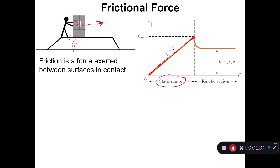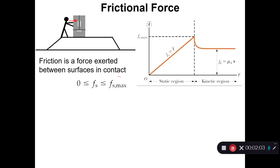In the static region, whatever force you apply, the body is not moving until the maximum static force is reached. After that, the body starts to move, and a slightly smaller force than the maximum is sufficient to keep it moving. This region of motion is called the kinetic region, where the body is in dynamic motion.